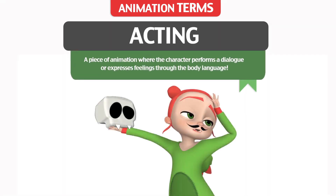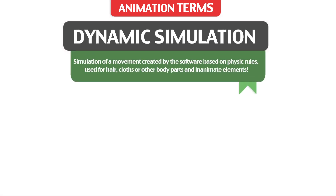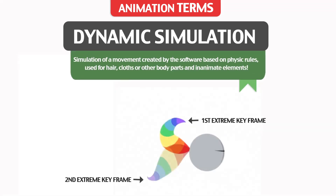Acting: a piece of animation where the character performs a dialogue or expresses feelings through body language. Dynamic Simulation: a simulation of a movement created by the software based on physical rules, often used for hair, clothes, or other body parts and inanimate elements.